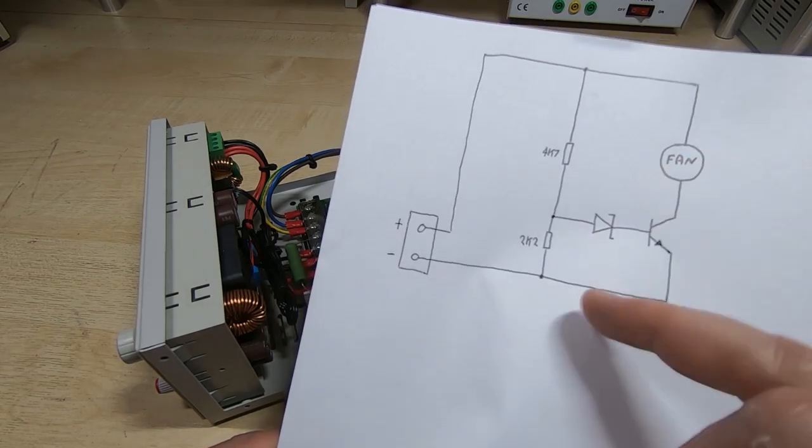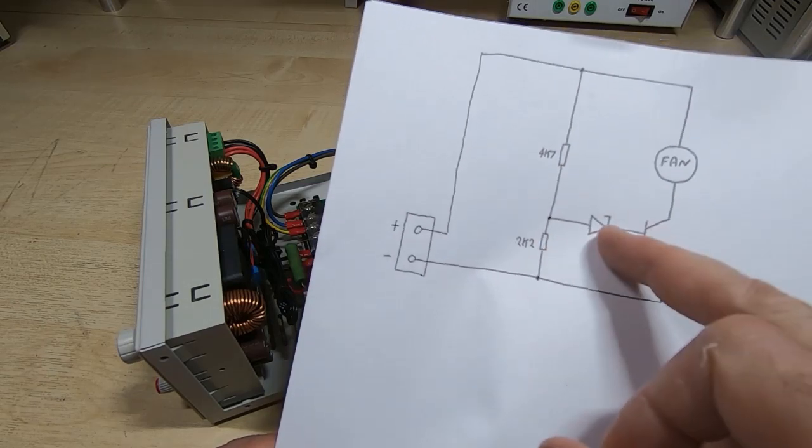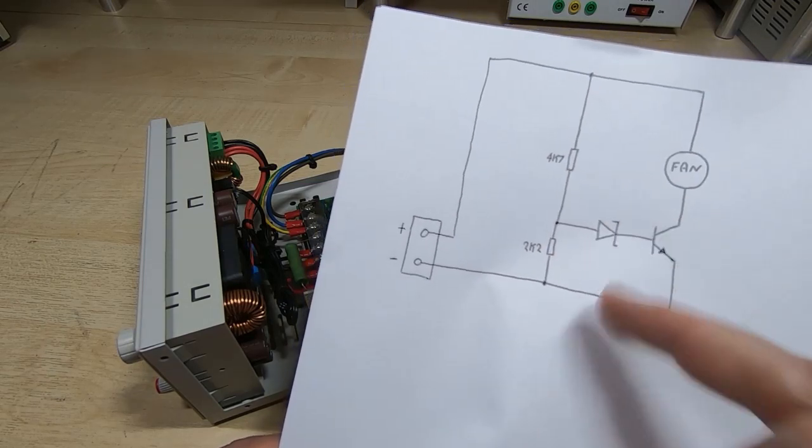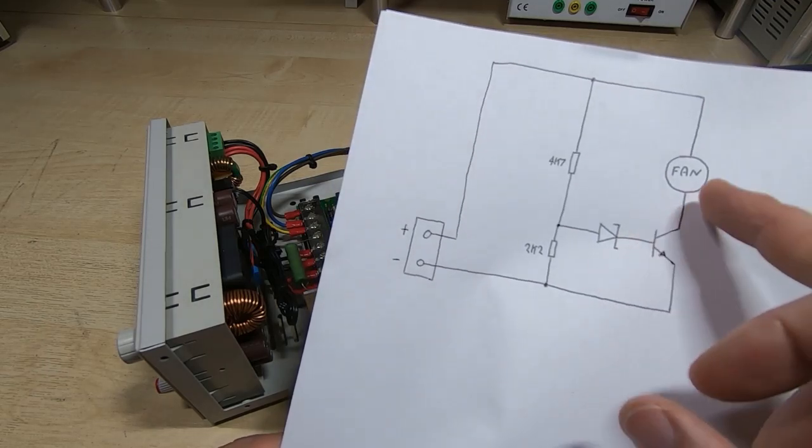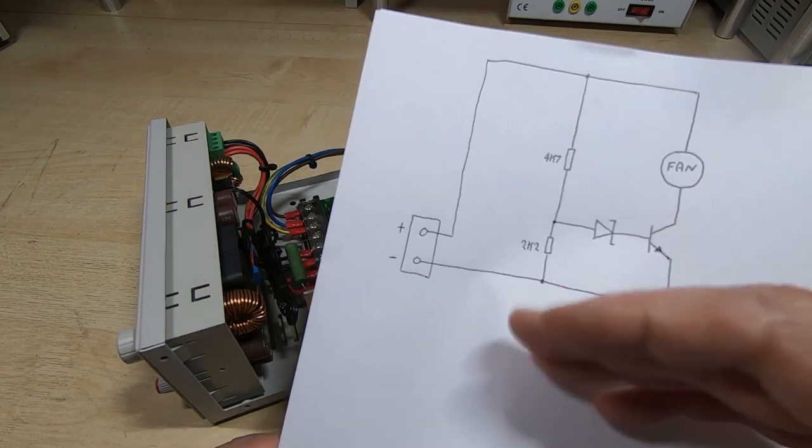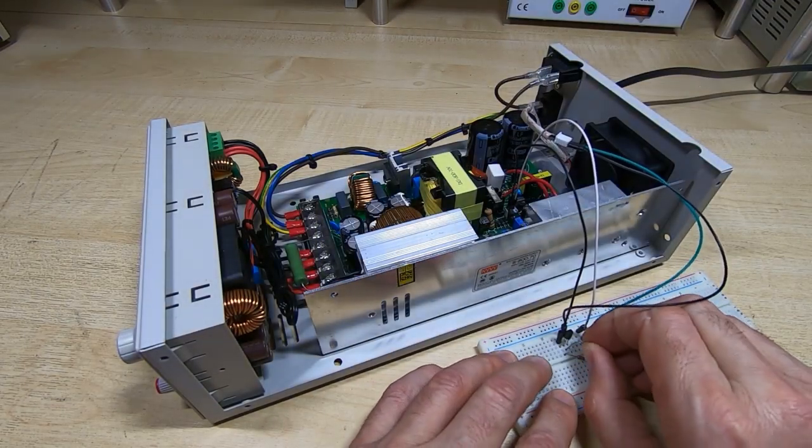The point at which the fan comes on and the speed it returns to depend on the value of the resistors and the value of the zener. So if you want to, you can change the zener for a different value and it will cause the fan to run faster or slower, but it will still change speeds. So if I change the zener for a different speed one...